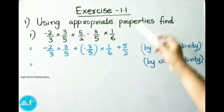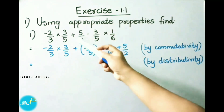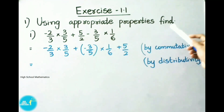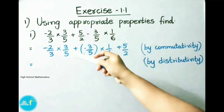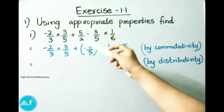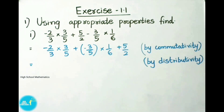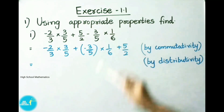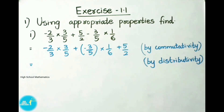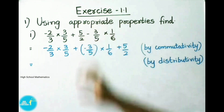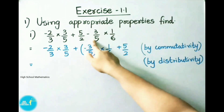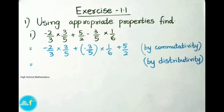See now, exercise 1.1, first question. Using appropriate properties, find first one: minus 2 by 3 into 3 by 5, plus 5 by 2, minus 3 by 5 into 1 by 6. Let us see the solution. Here, these two values, we are going to apply commutative property, that is a plus b can be written as b plus a. Let us treat 5 by 2 as a, and minus 3 by 5 into 1 by 6 as b.